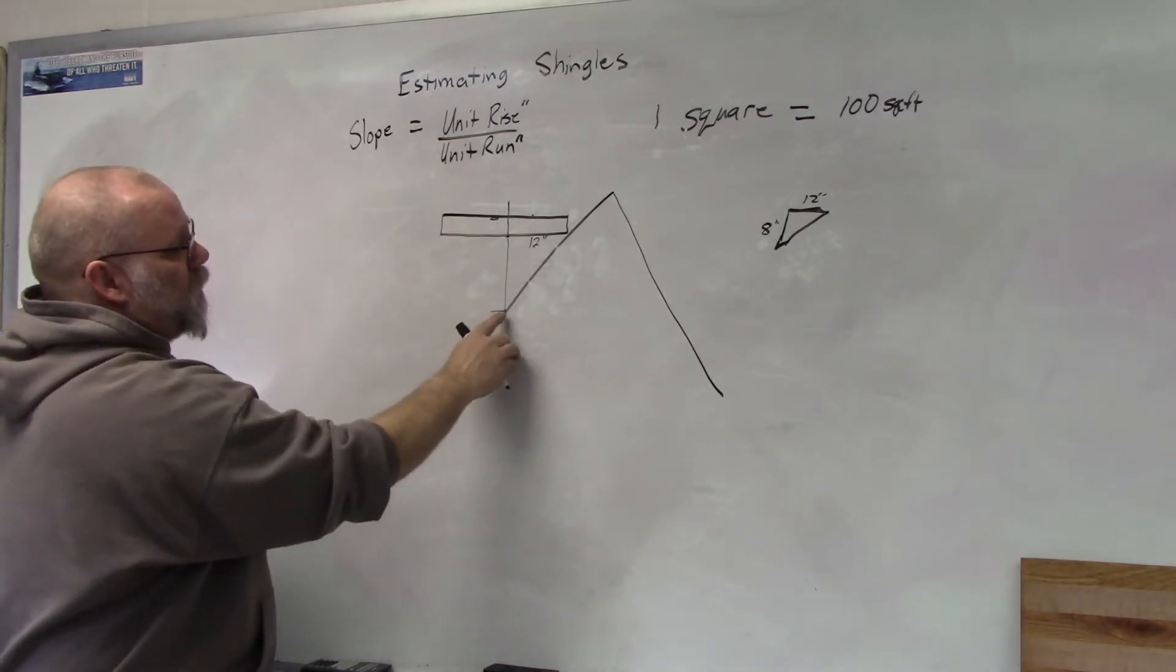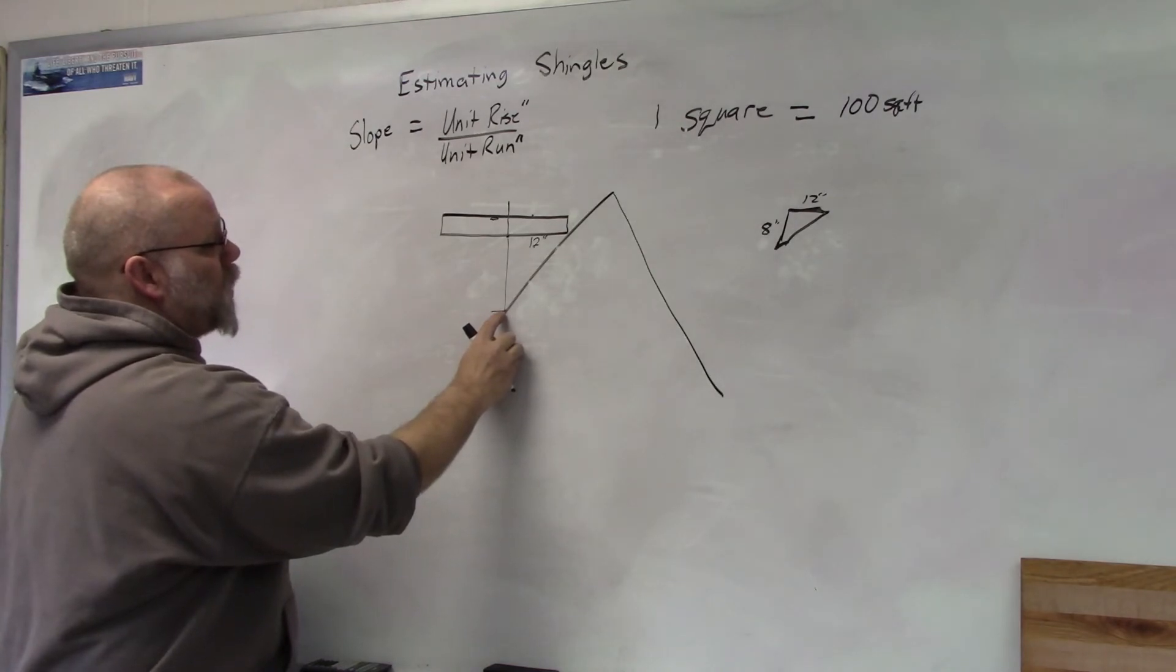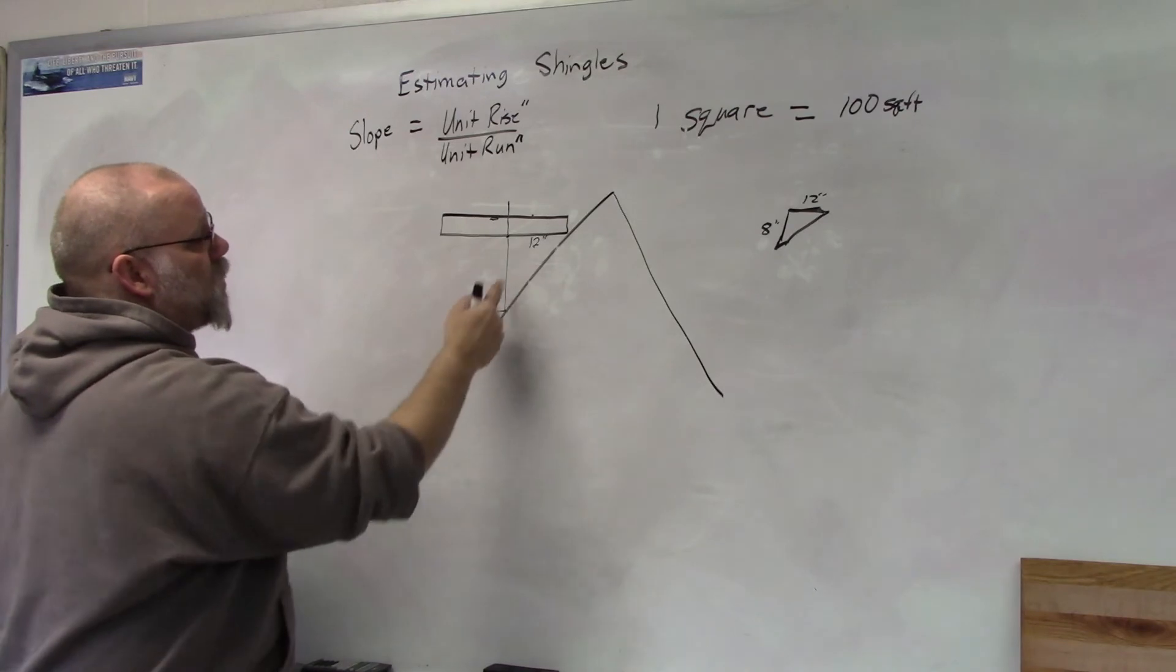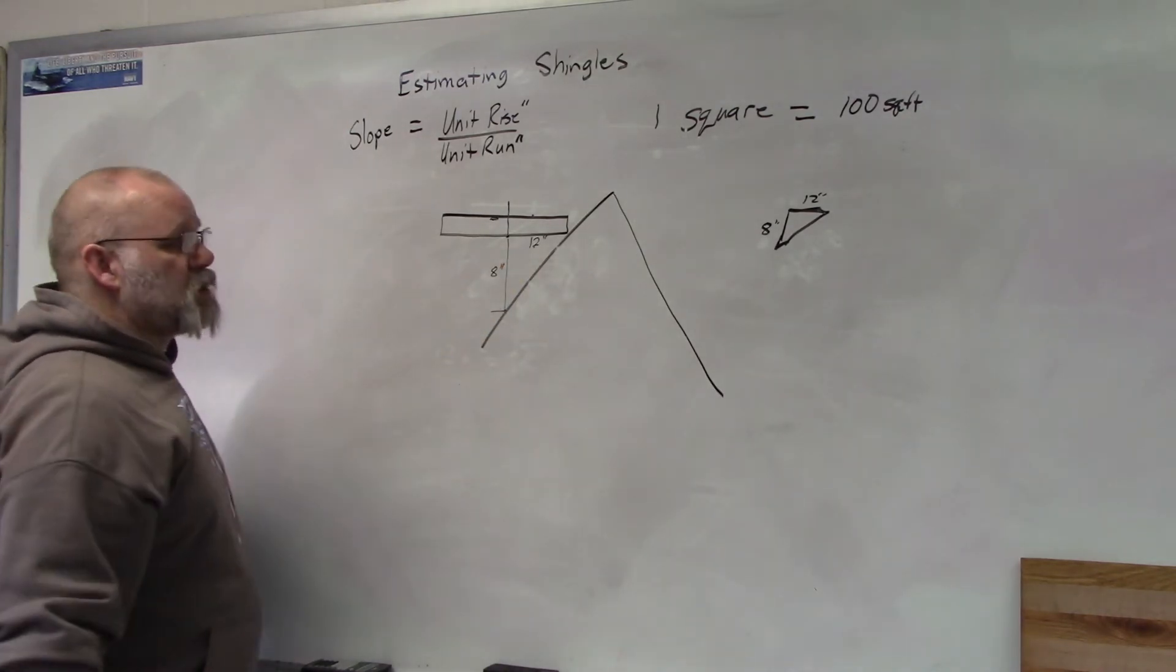a piece of string, usually weighted. Maybe if you have a plumb bob or something, put a weight on there so it'll hang straight. Measure this distance and that's how you find your slope.